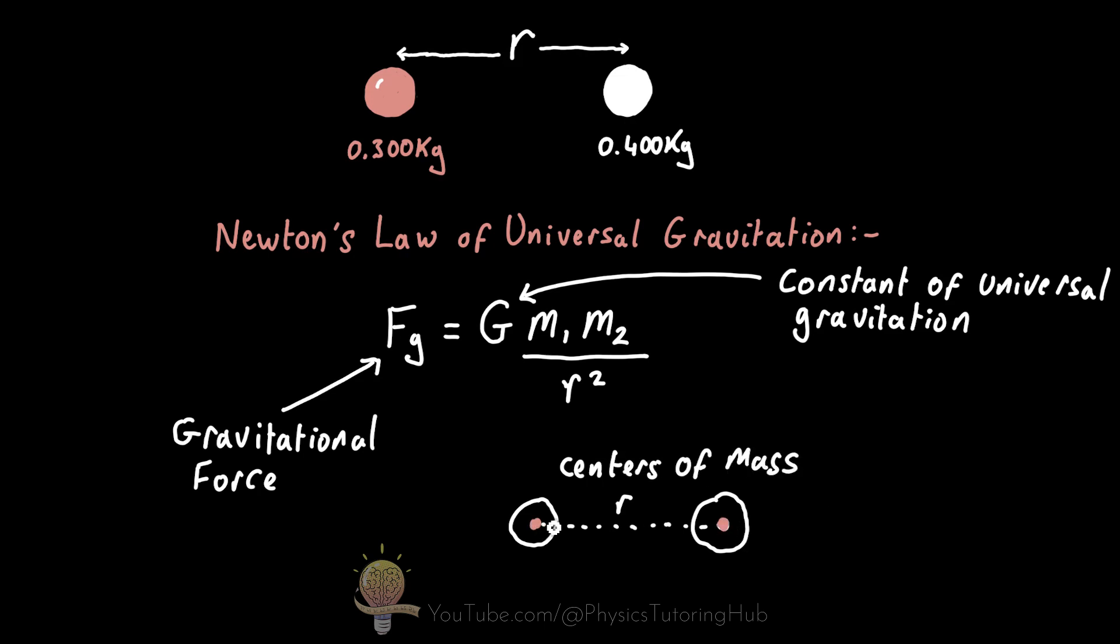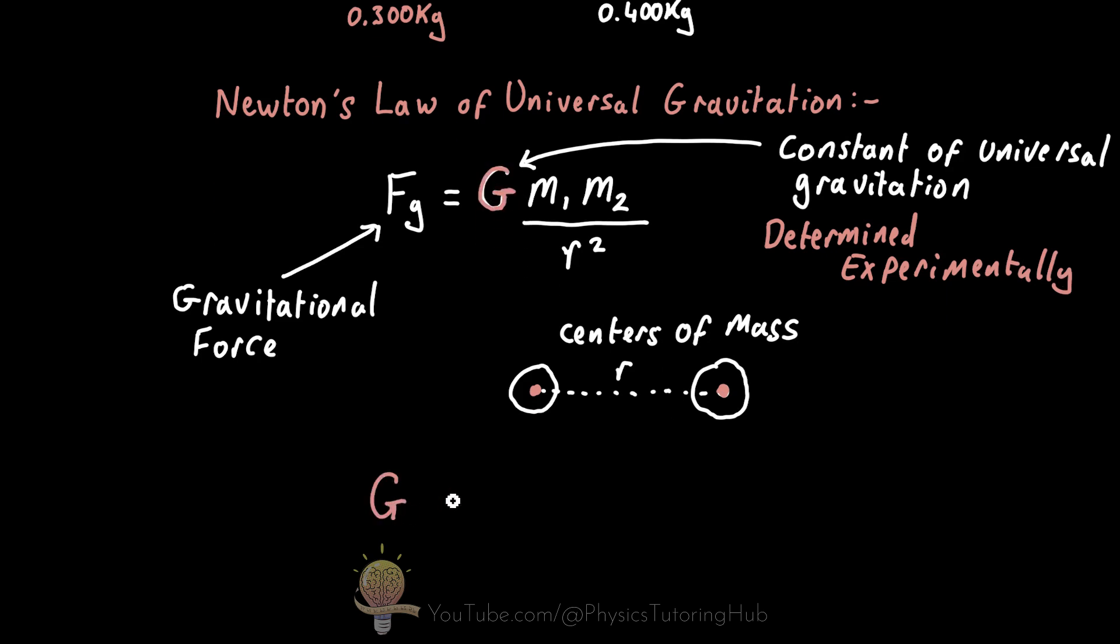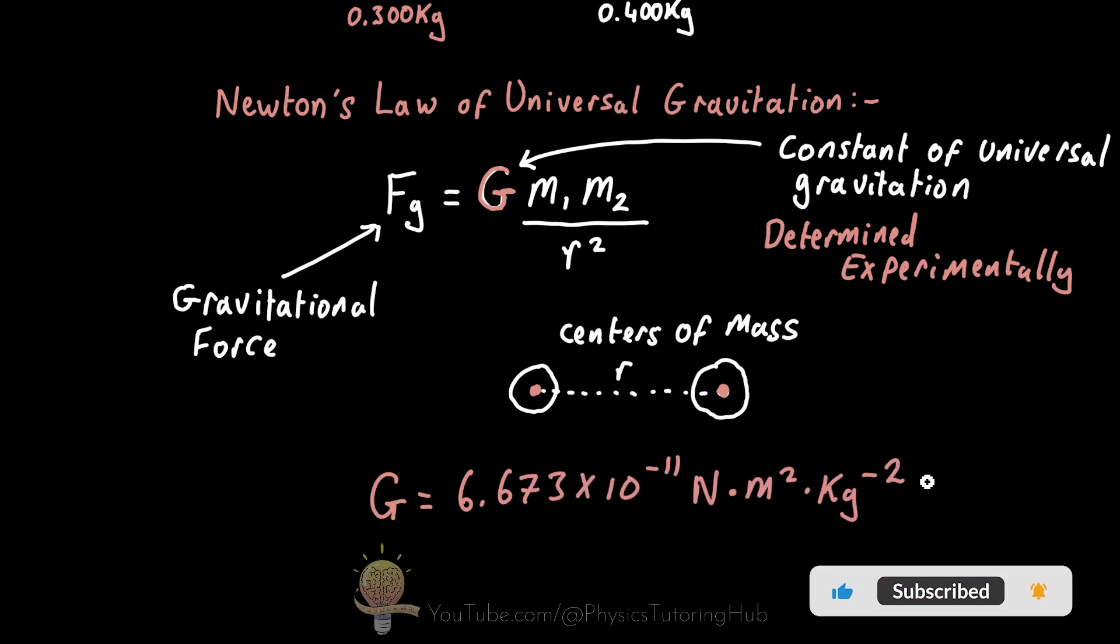So in Newton's day no one knew the value of the constant of universal gravitation, but experiments have since determined the value to be 6.673 times 10 to the minus 11 newtons meter squared per kilogram squared.